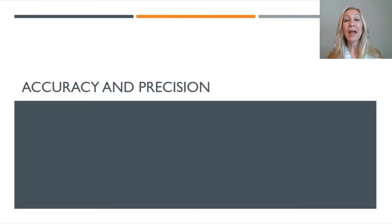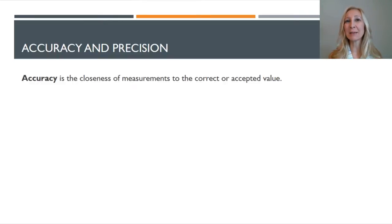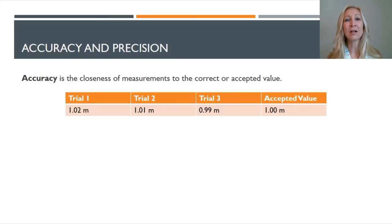So first, what is accuracy? Accuracy is the closeness of a measured value, so what you got, with the accepted value. So how close did you get to the correct answer? If you did multiple trials, you will average your trials and determine if that average is close to the accepted value.